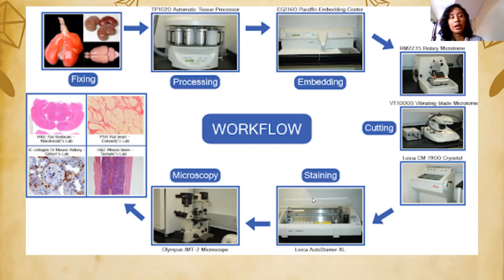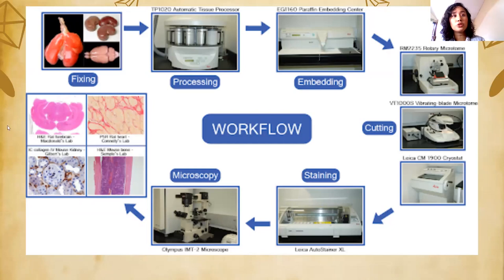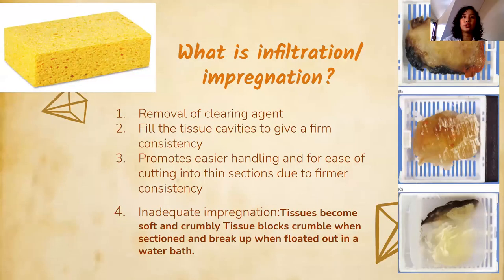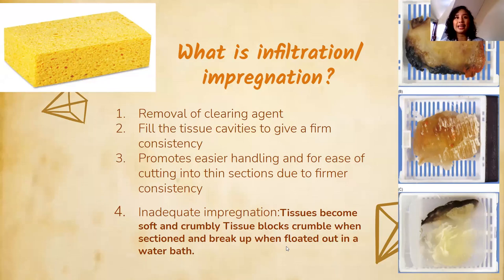You can see from this tissue slide that since the tissue was oriented properly, you can see the different layers and parts. Orienting and arranging the tissue properly will affect what the tissue looks like. So the first part of our topic is infiltration or impregnation.